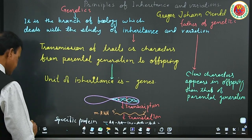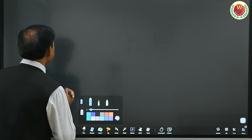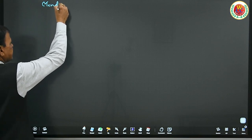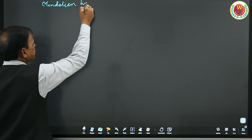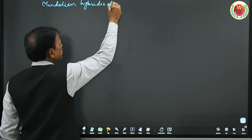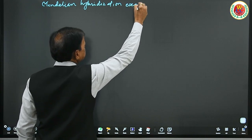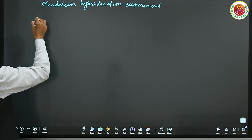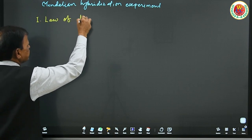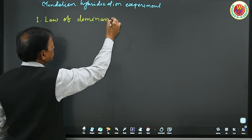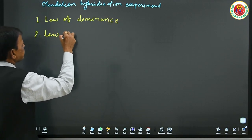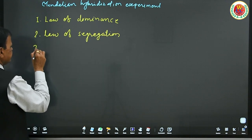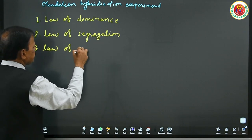This chapter is fully devoted to Mendel, as he had studied genetics thoroughly and put forth these three laws of inheritance: first law — law of dominance; second law — law of segregation; third law — law of independent assortment. In this chapter, we are going to study these laws simultaneously.